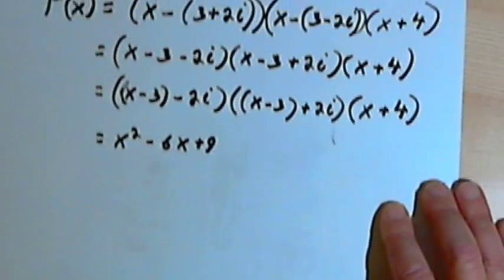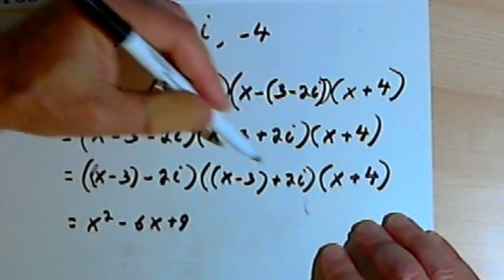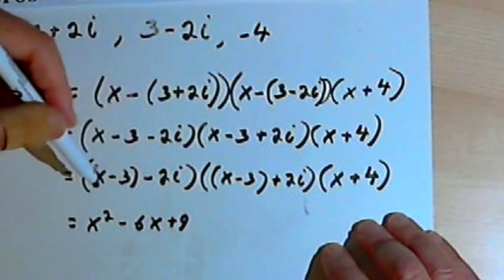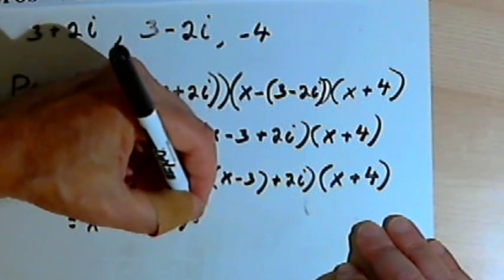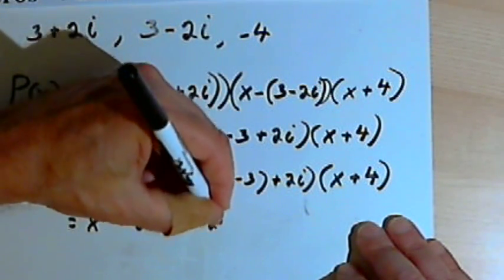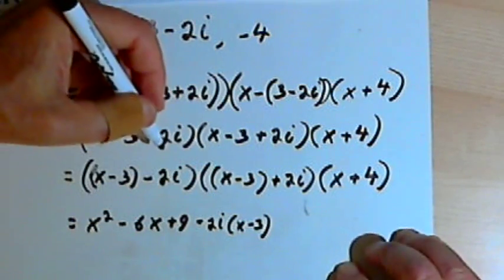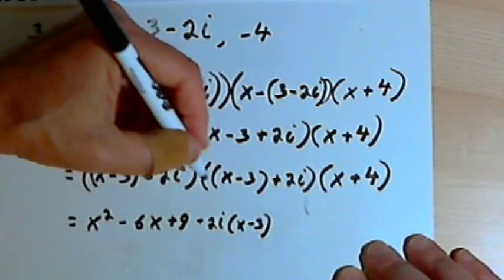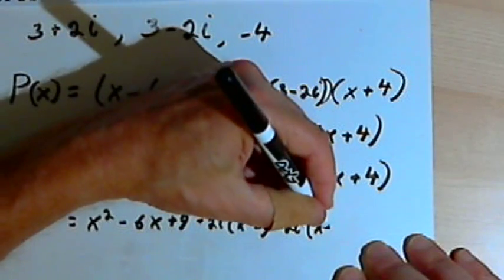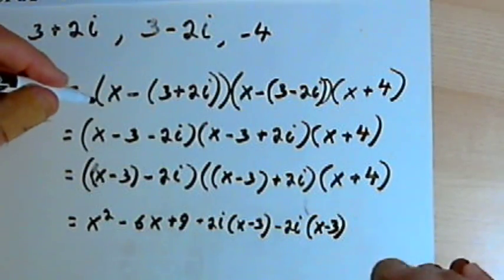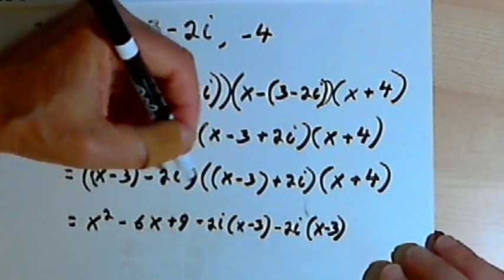So the first times the first is going to be x squared minus 6x plus 9. Then I would do the first times the last. That would be this x minus 3 times 2i, so let's call that plus 2i times x minus 3. And then I would have the inside ones, negative 2i times x minus 3.